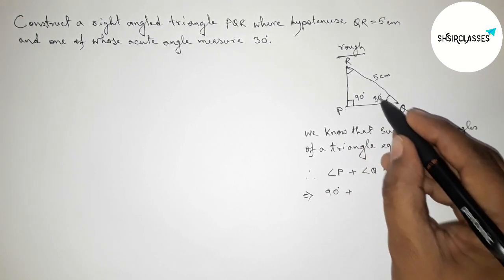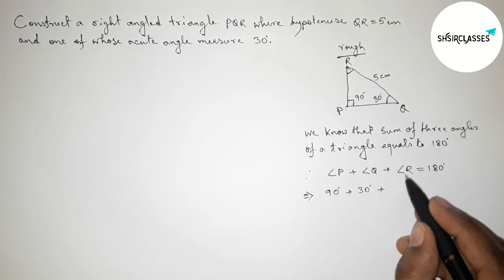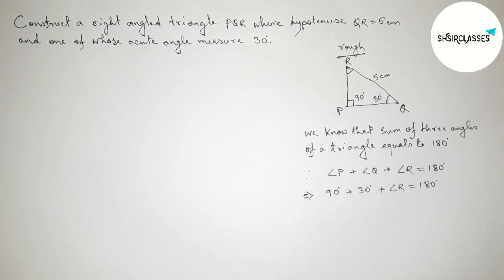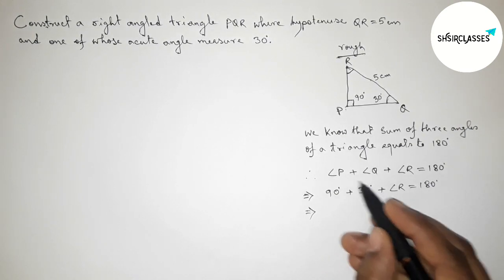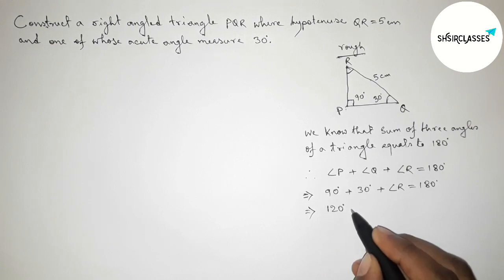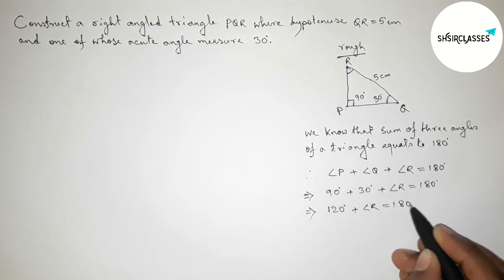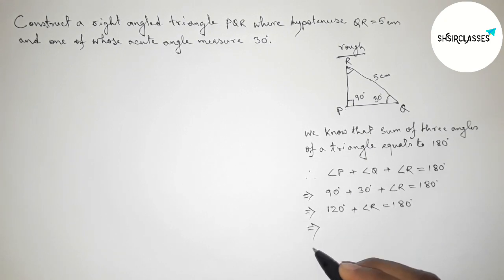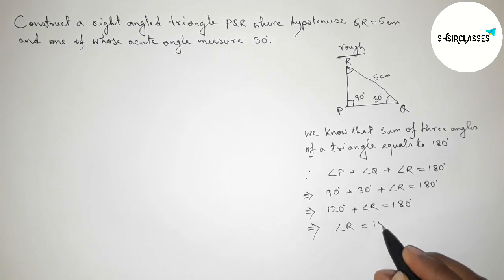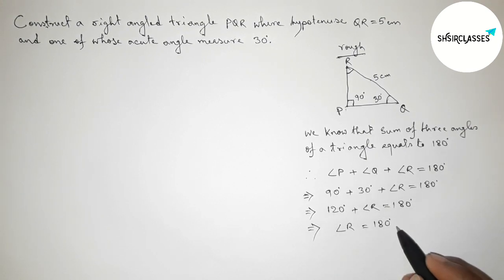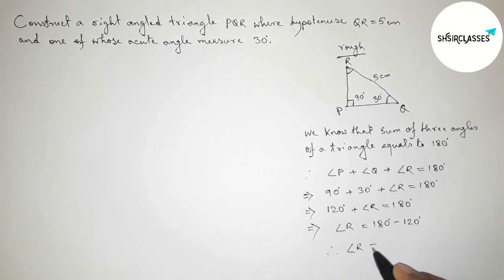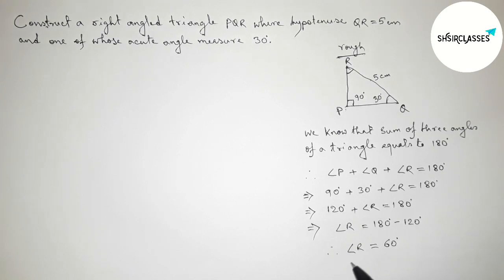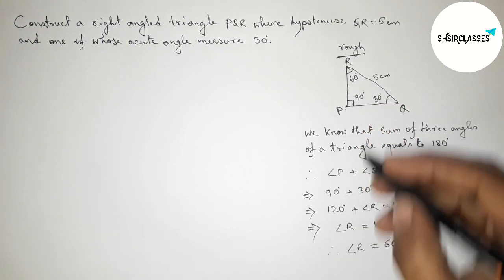So: 90 degrees plus 30 degrees plus angle R equals 180 degrees. Adding these gives 120 degrees plus angle R equals 180 degrees. Therefore angle R equals 180 minus 120 degrees, so angle R equals 60 degrees. Next I am going to apply this concept to construct the right angle triangle PQR.